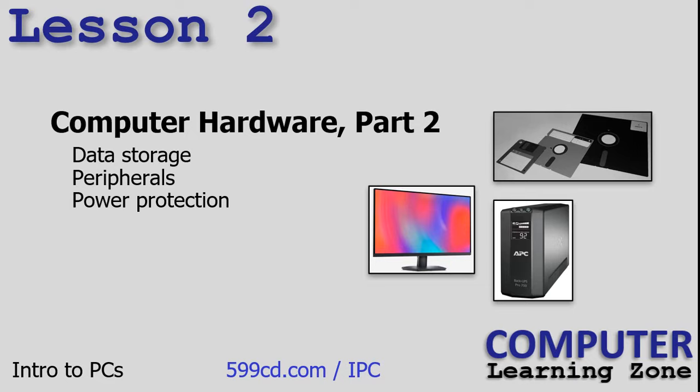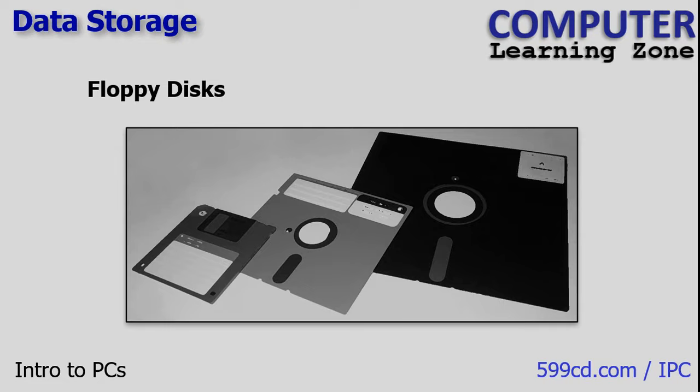In Lesson 2, we are continuing to learn about computer hardware. We're going to talk about data storage, peripherals, and power protection. Let's talk about external data storage — storing files outside your computer to transport them somewhere else. Let's take a little walk down memory lane.